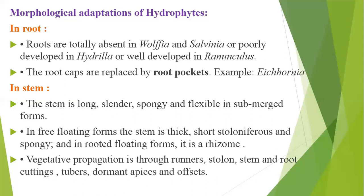In rooted floating forms, the stem is a rhizome. Vegetative propagation is through runners, stolons, stem and root cuttings, tubers, dormant buds, epics and turions.